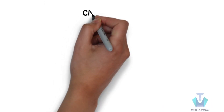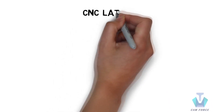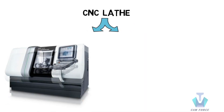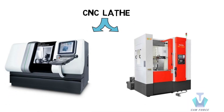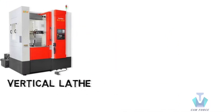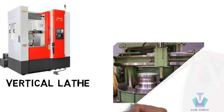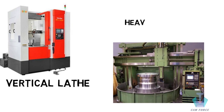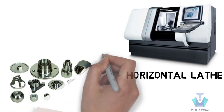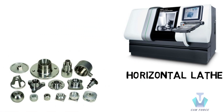Generally, the turning centers are two types. They are horizontal turning center and vertical turning centers. The vertical turning centers are used for heavy components, while horizontal types are used widely for general applications.